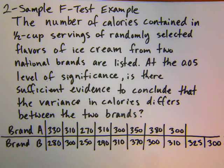Here's an example of a two-sample F-test. You have the number of calories contained in half-cup servings of randomly selected flavors of ice cream from two national brands. At the 5% level of significance, is there sufficient evidence to conclude that the variance in calories differs between the two brands?